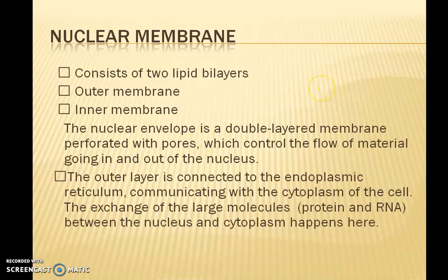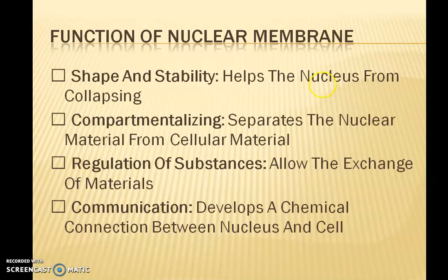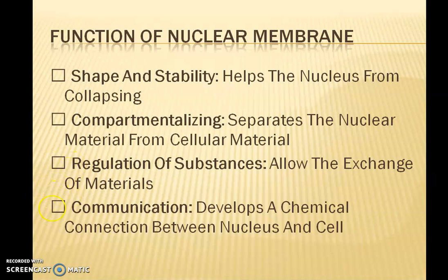The outer membrane of the nucleus is connected with the endoplasmic reticulum and is communicating with the cytoplasm. The functions of the nuclear membrane are: it gives shape and stability to the nucleus; it helps in compartmentalization, separating the nuclear contents from the cytoplasmic contents; it allows certain substances to pass through, regulating transport in and out of the nucleus; and it helps in communication between the cytoplasm and the nucleus.